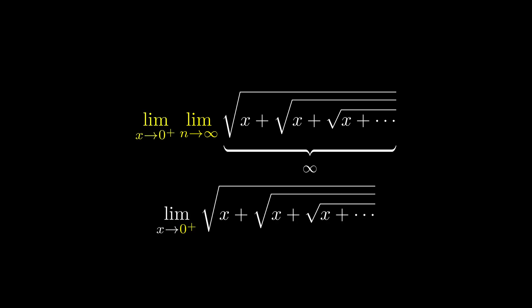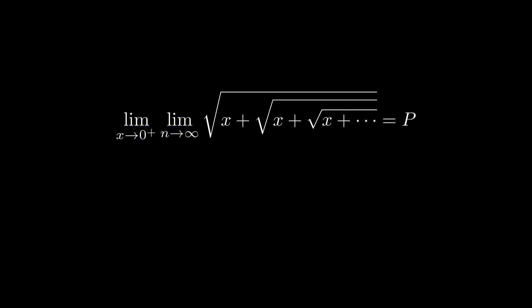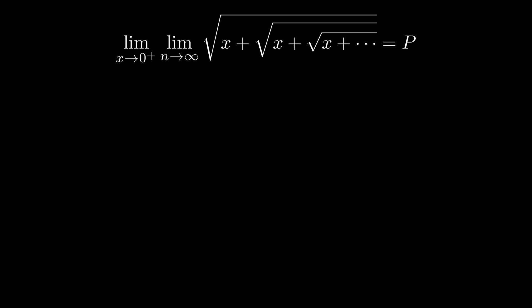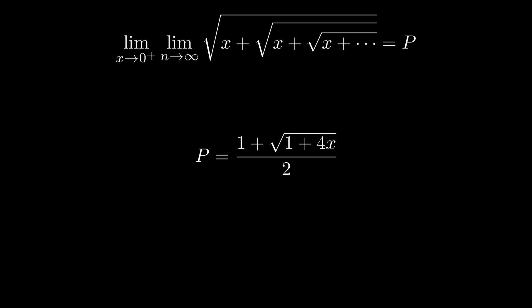Look at the original question — the n goes to infinity limit is implicit. Let's set this limit to be p, and play the old trick. So p equals square root of x plus p. Square both sides: p squared equals x plus p. Then p squared minus p minus x equals 0. This quadratic equation has two roots. Which one should we pick? Notice that p is a square root. Treating p as a function of x, no matter how small x is, p can never be negative. Therefore, we have to take the positive root.